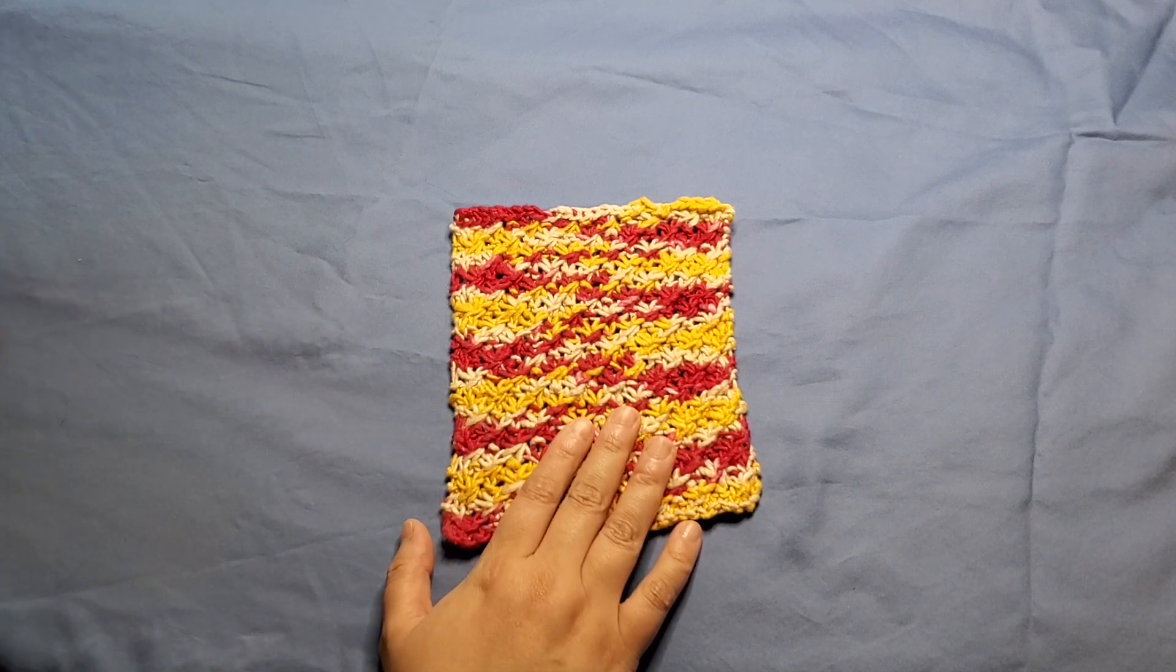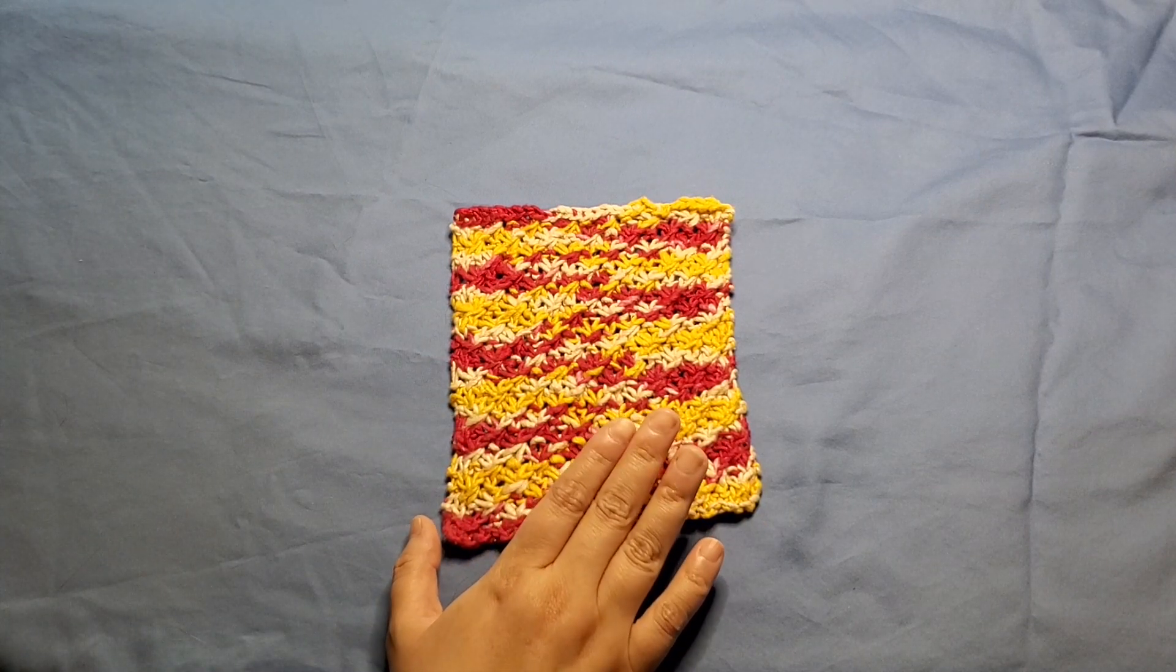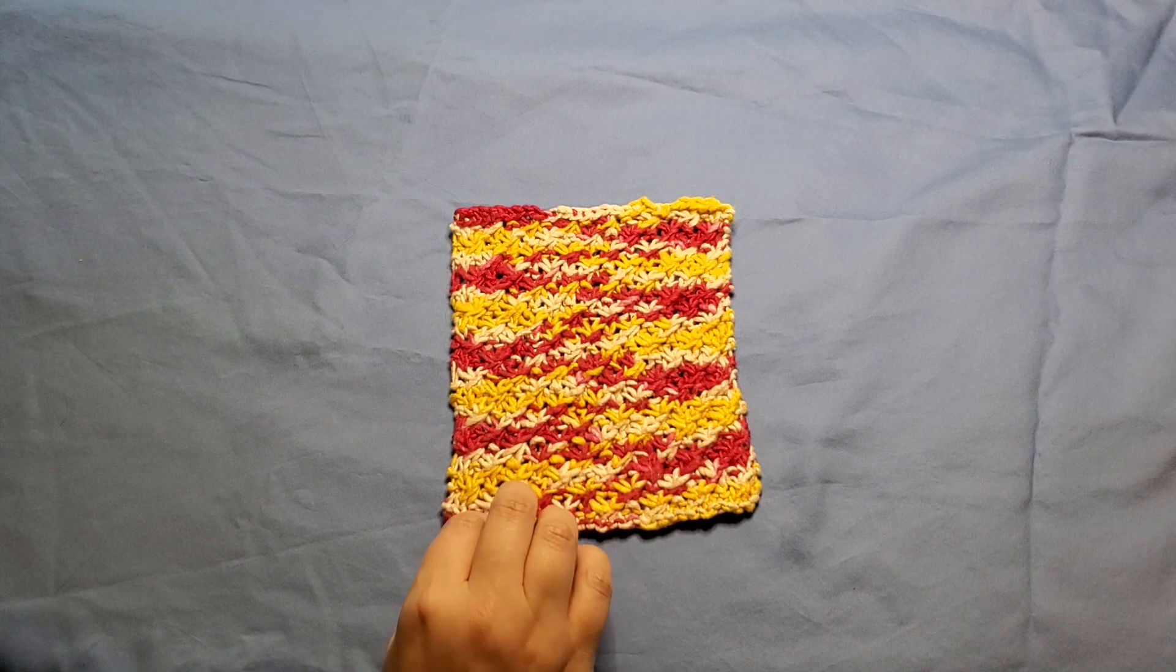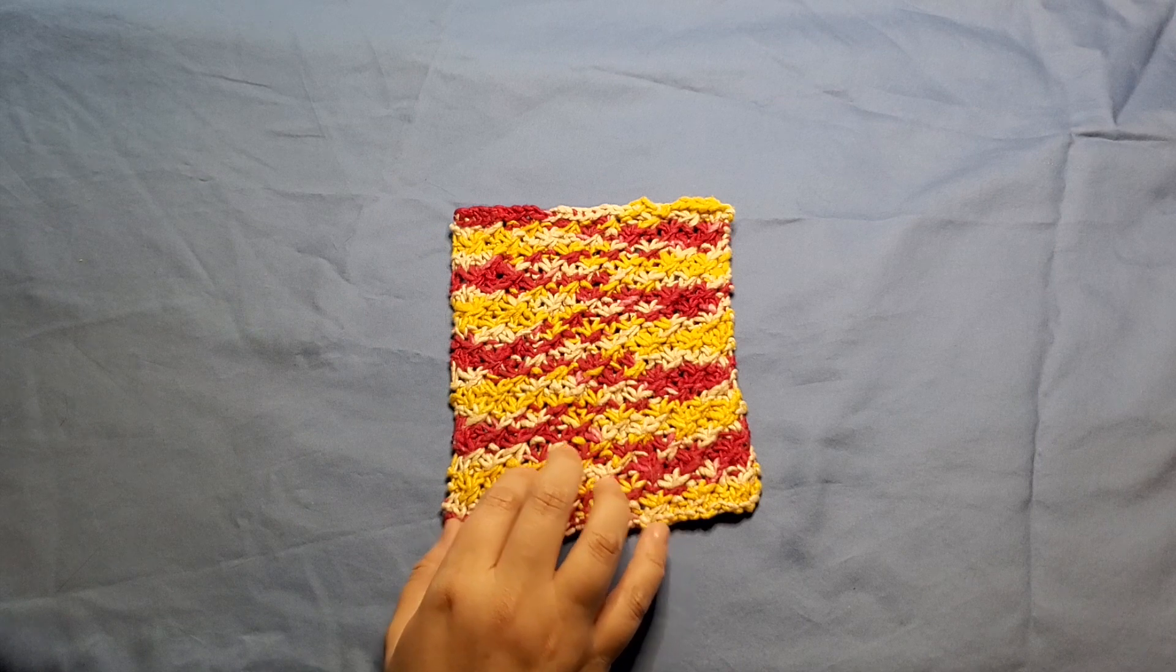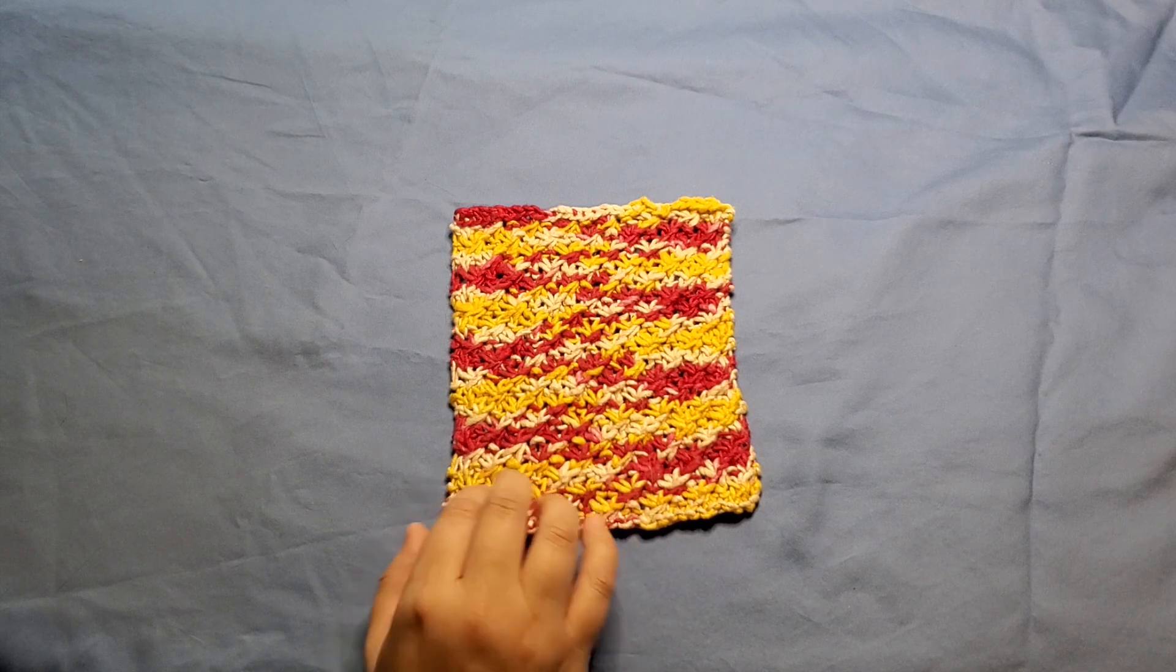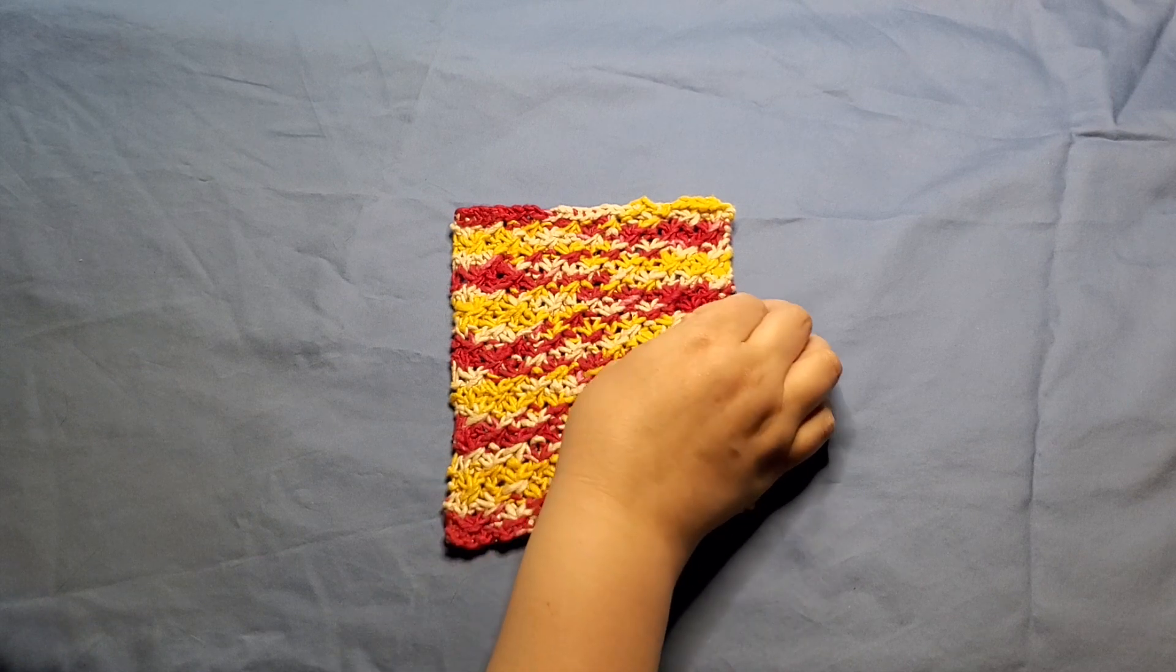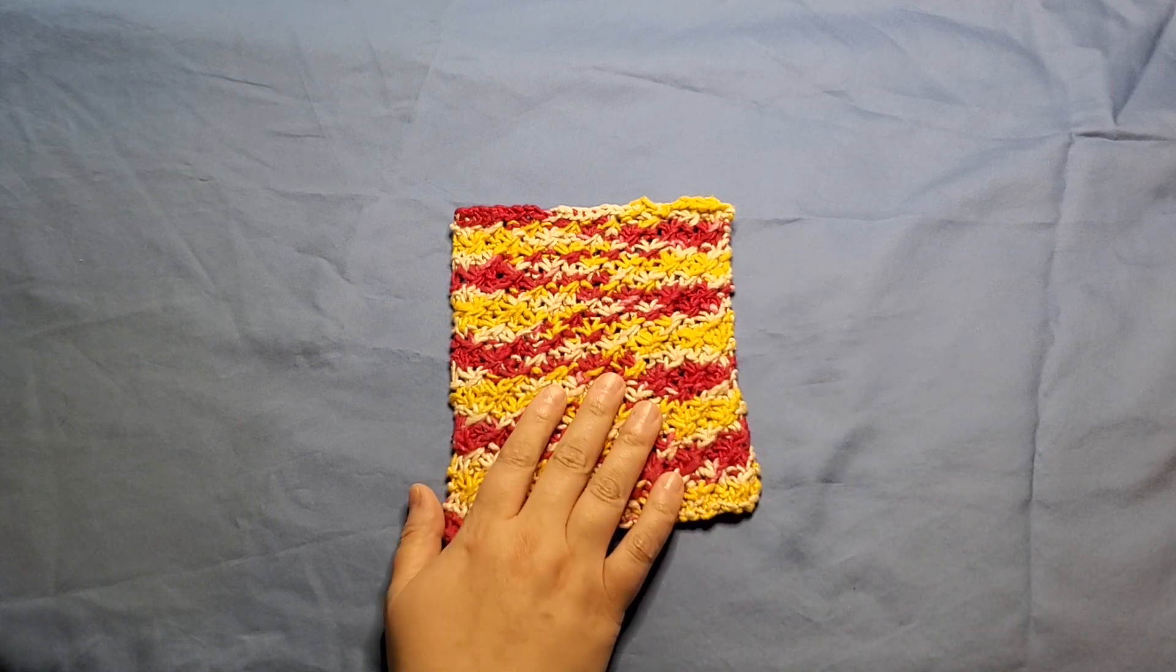For this stitch, the biggest thing you need to worry about is your tension. So if you are a tight knitter, I would recommend going up one or two needle sizes. And definitely, this is one that you're going to want to check your gauge on. It can get very tight, which makes it hard to work the daisy stitch.